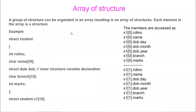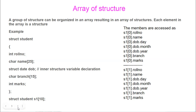In this video we are going to see about the array of structure. A group of structures can be organized in an array, resulting in an array of structure. Each element in the array is a structure. For example, you define the structure with the struct keyword, then give a name for the structure, and these are the member variables of the structure. With 'struct student s1[10]', this becomes an array of structure.